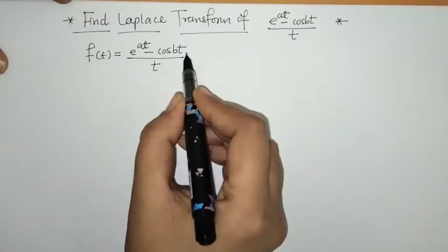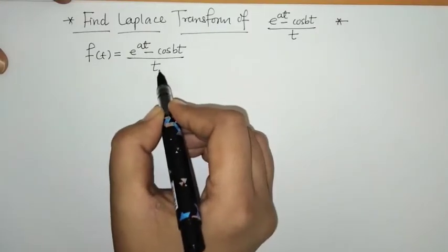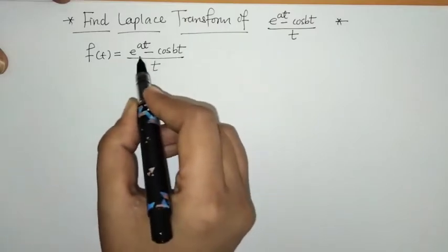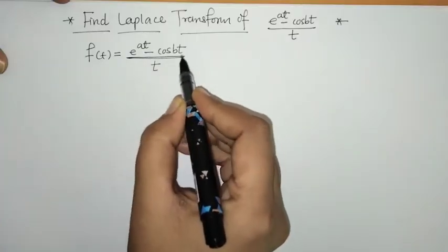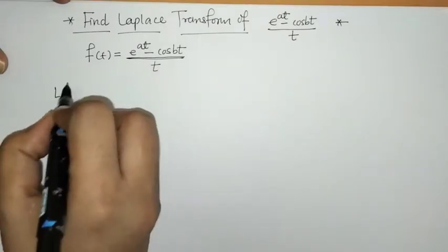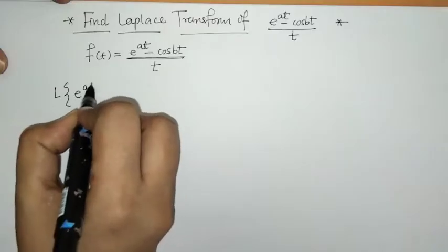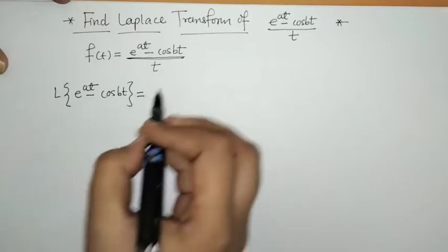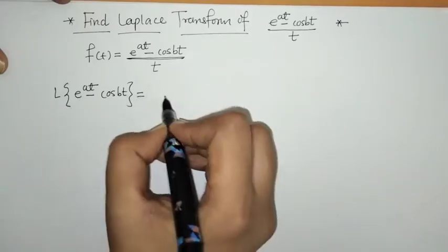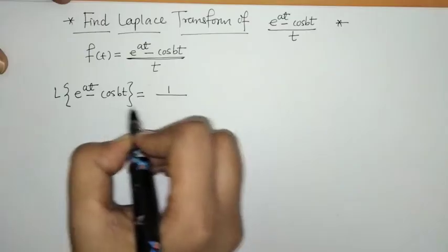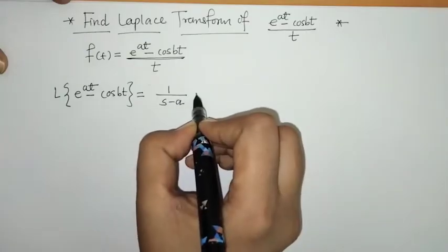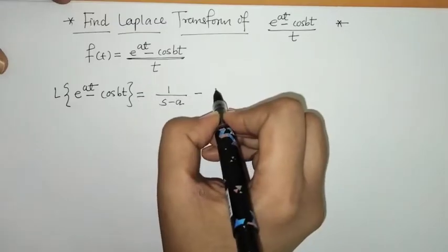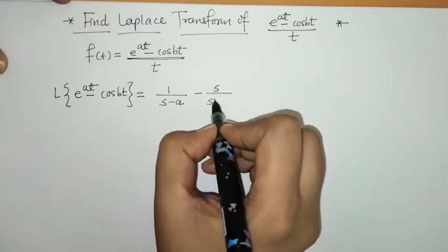We can see that we have this function divided by t, which means we have to apply the effect of division by t. So first we have to find the Laplace of the numerator — that is, the Laplace of e raised to at minus cos(bt). We know the Laplace of e^(at) is 1/(s minus a), and the Laplace of cos(bt) is s/(s² plus b²).